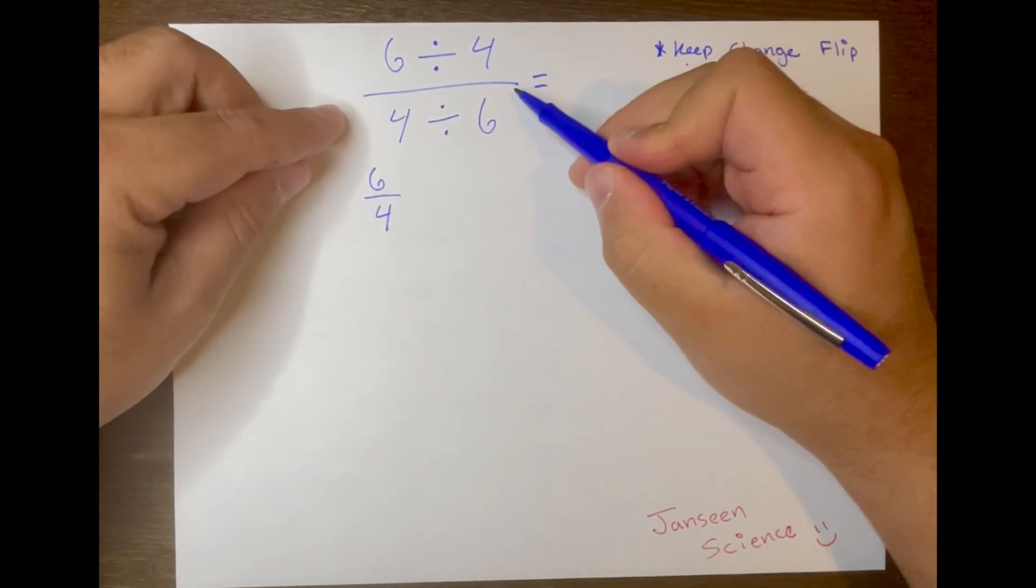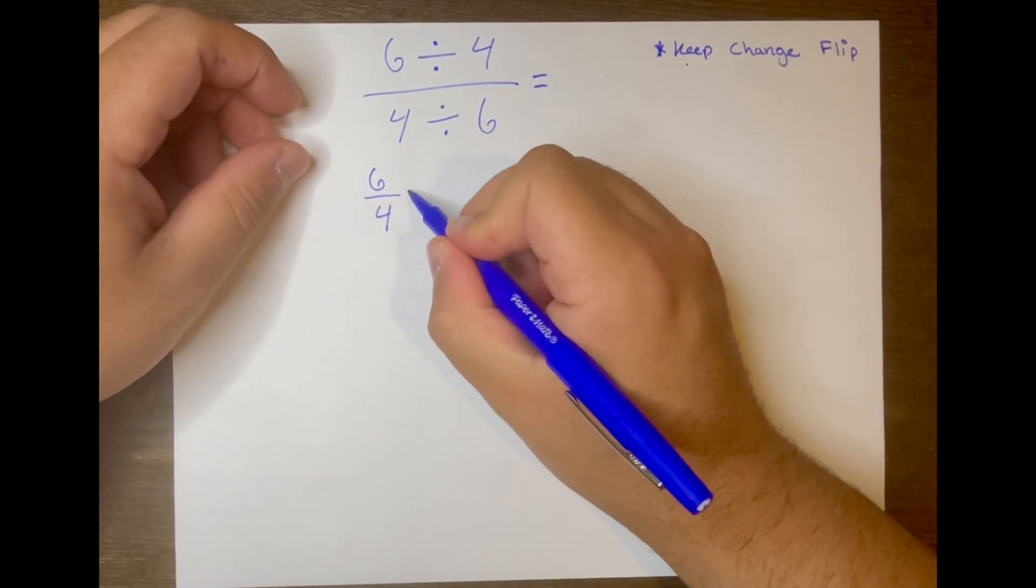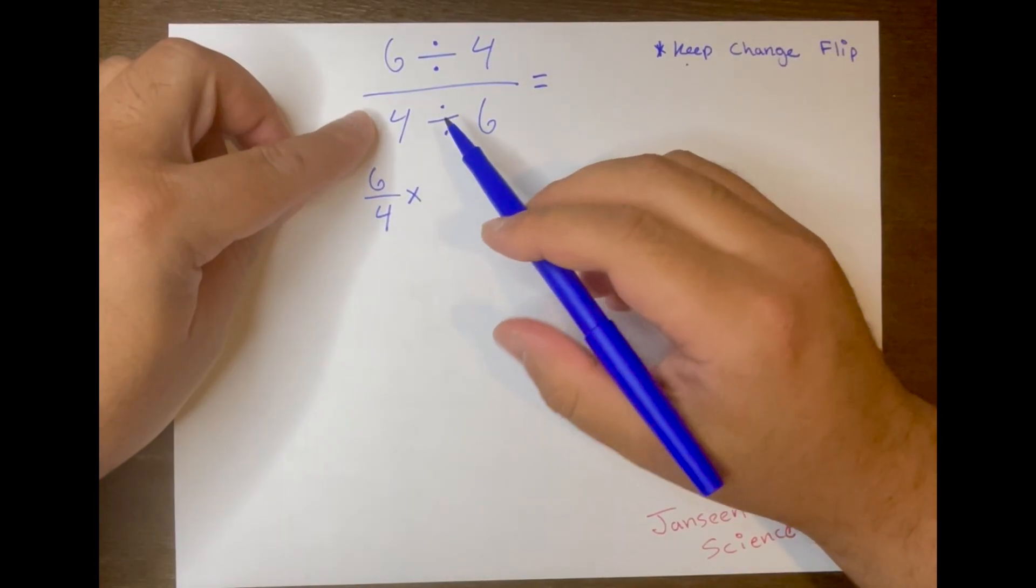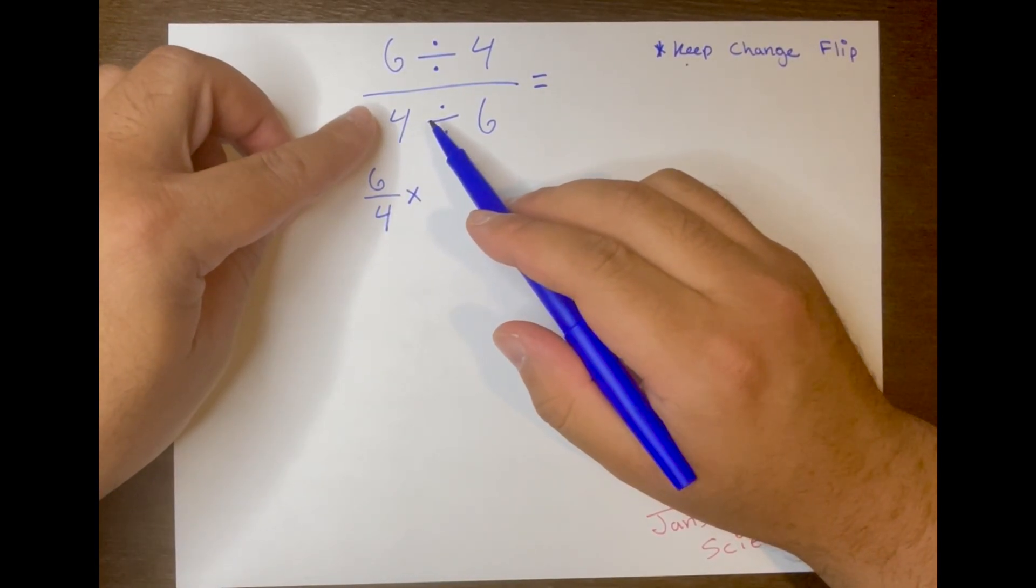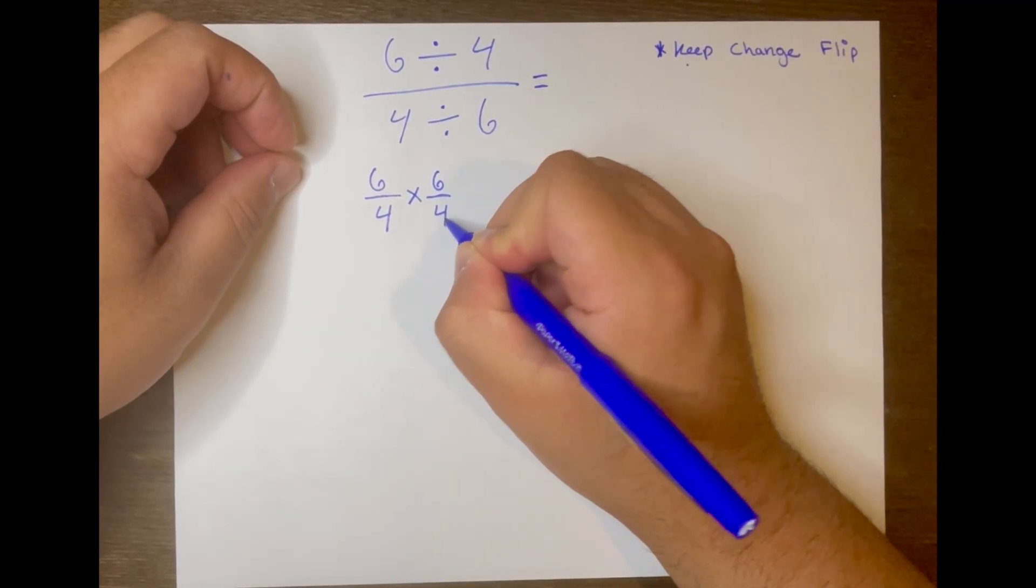Then we want to change this division line to multiplication. And lastly, we want to flip 4 divided by 6, and it's going to be written like this: 6 over 4.